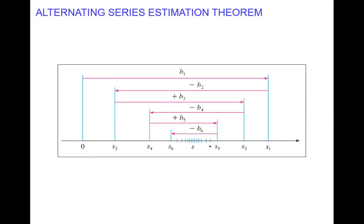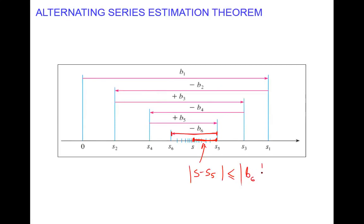I have a proof of this — you're welcome to pause the video and go through it. This illustration also shows that the difference between a particular partial sum and the actual sum is always less than the next term. For example, taking S sub five, the difference between S and S sub five is less than B sub six. We can see the bottom line — the difference — is definitely less than B sub six in magnitude.